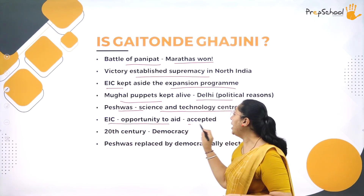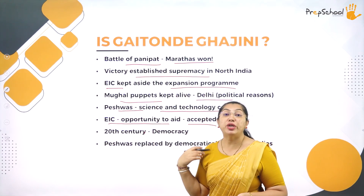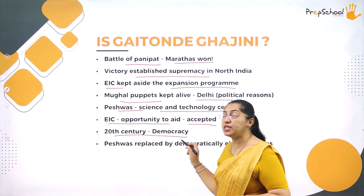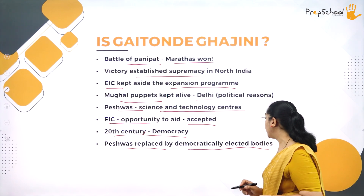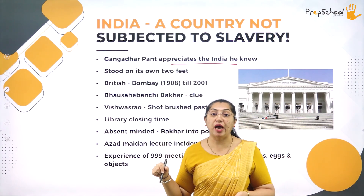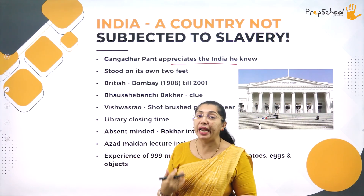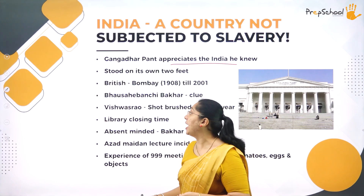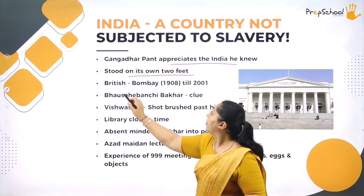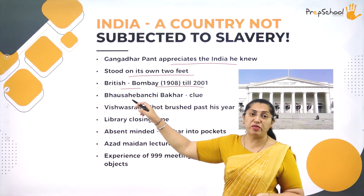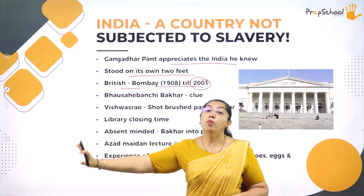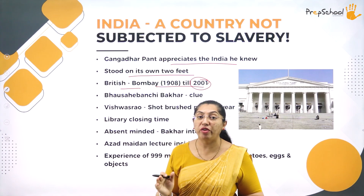The East India Company was ready to help and accept the new situation. In the 20th century, the Peshwas were replaced by democratically elected bodies. Gangadhar Pant appreciates India — he had thought India was under slavery, but he gets to know that it is not at all in slavery. India stood on its own two feet. A treaty was signed, and by the year 2001, the East India Company had to leave Bombay and move away from India.